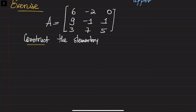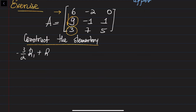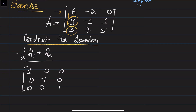Let's start. You need to choose the leading entry and eliminate everything below it. So you need to eliminate the 9 first, then the 3. To get rid of the 9, multiply the first row by -3/2 and add it to the second one. We construct the elementary matrix by applying this row operation to the identity matrix. Applying this gives E1 = [[1, 0, 0], [-3/2, 1, 0], [0, 0, 1]].